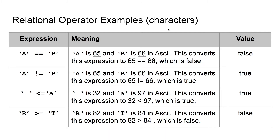We can now look at these relational operators with characters. The first expression checks if character A is equivalent to character B. It ties these back to their ASCII table decimal values and checks the expression based on those values. In this expression, A is 65 and B is 66 in ASCII, which converts the expression to 65 is equal to 66 — that is false. When we use the not equal operator, since A is 65 and B is 66 in ASCII, it converts to 65 is not equal to 66, which is a true expression.